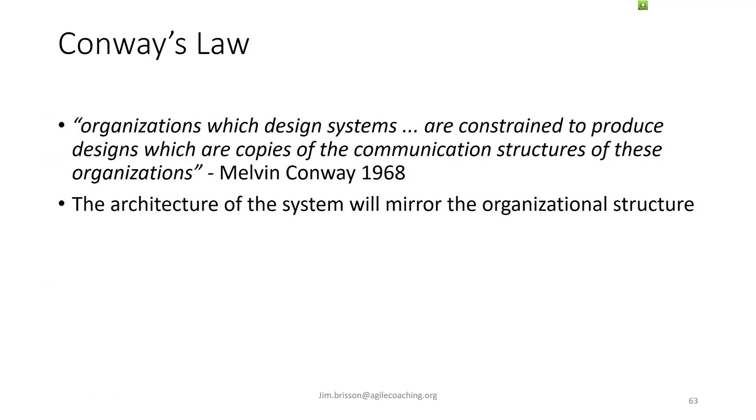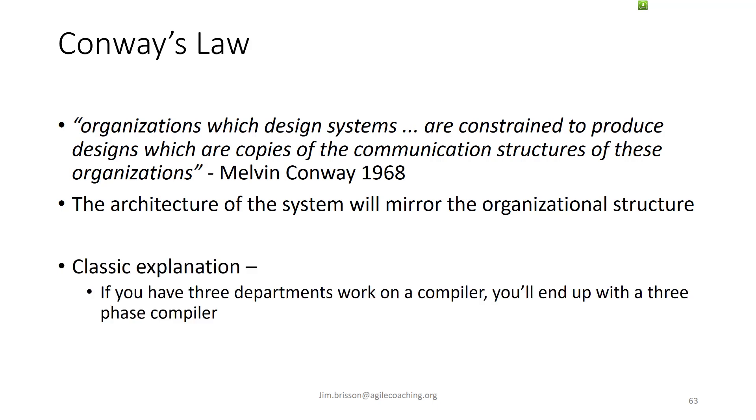Now Conway's law says that organizations that design systems will produce designs that are copies of the communication structures of those organizations. So basically, the architecture of the system will mirror the organizational structure. And the clear example that I've heard pretty often is that if you have three departments work on a compiler, you're going to end up with a three-phase compiler.